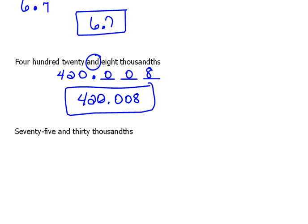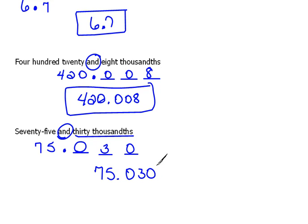Alright, one more of these. Here we have 75 and 30 thousandths. So here's our decimal point. 75 would be our whole number portion. And 30 thousandths - well again, we need our place value properly. This would be tenths, hundredths, thousandths. If it says 30 thousandths, this would read 30 ending up in the thousandths position. And because they didn't tell us anything about this, we have to add a zero. So this would be 75 and 30 in the thousandths position.